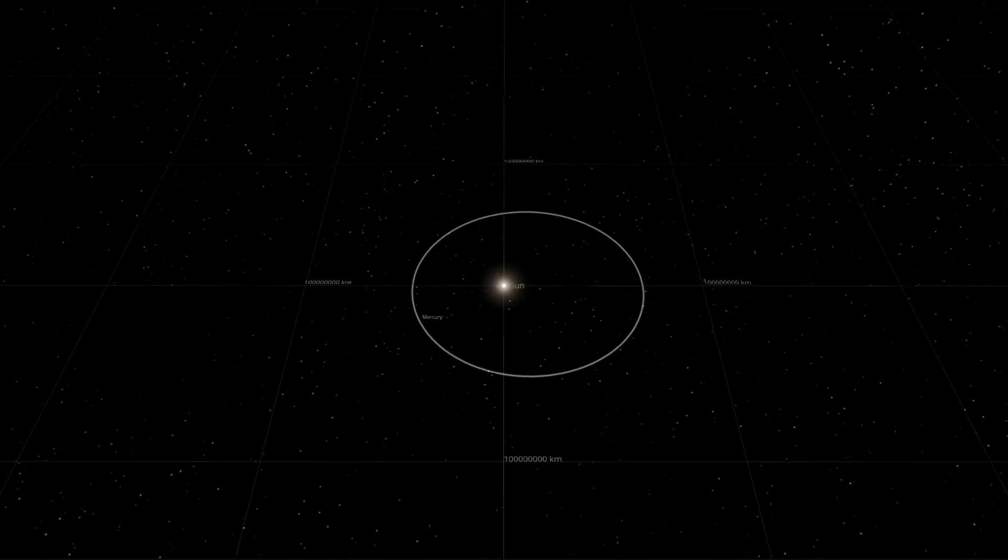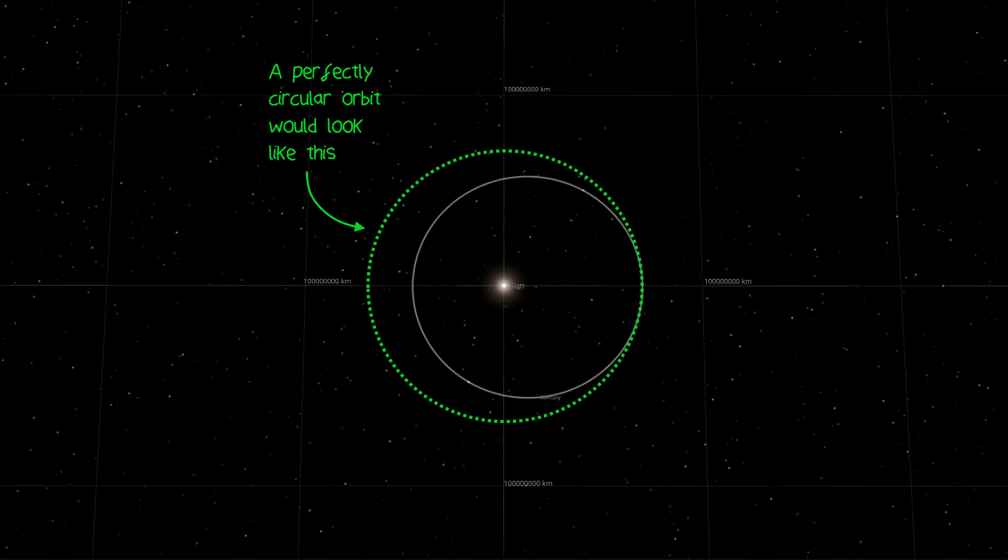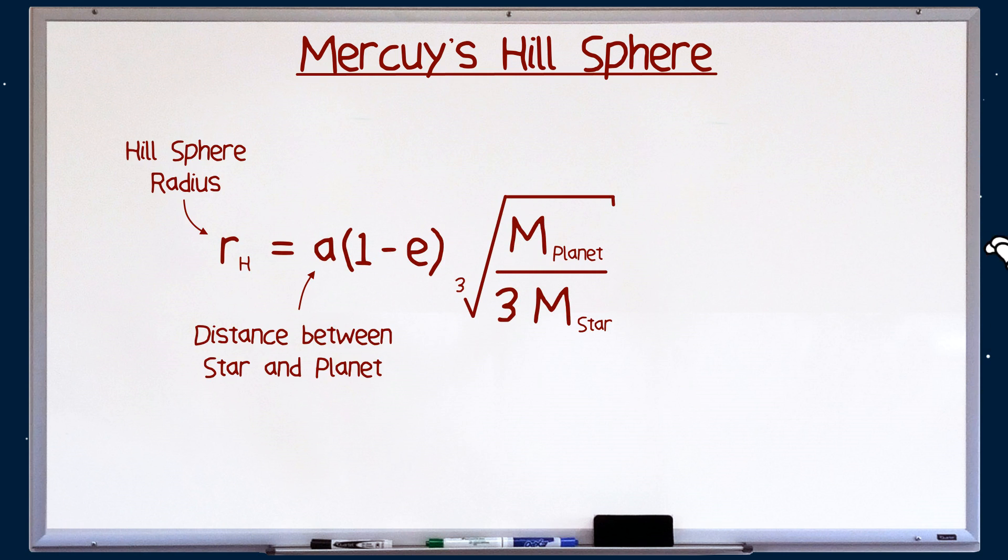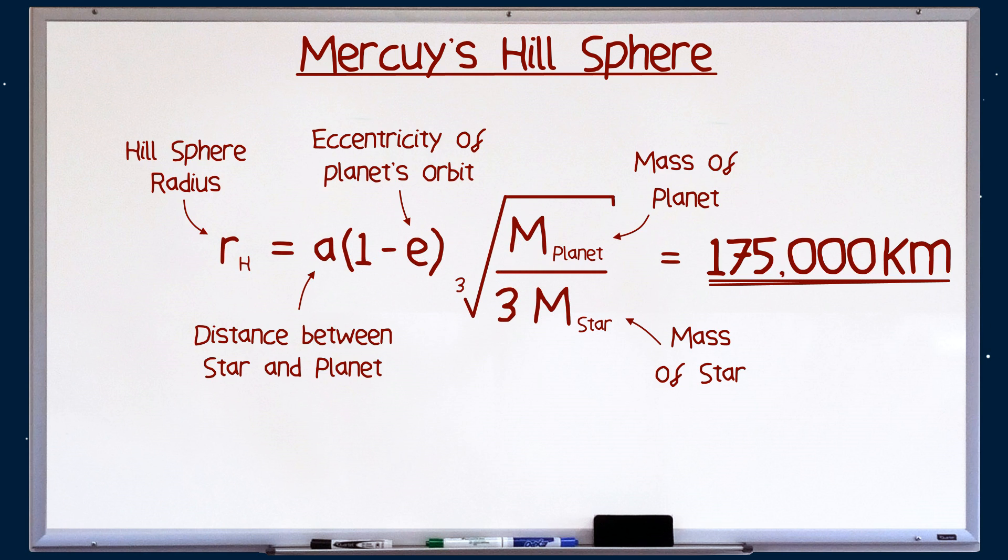Oh, and since Mercury's orbit isn't perfectly circular, we need to take its eccentricity into account. Putting all these numbers into this equation, we get a Hill sphere radius of about 175,000 kilometres.